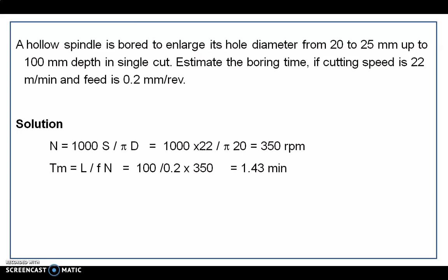The conventional formula for speed and machining time holds good for boring too. Here N equals 1000 multiplied by cutting speed divided by pi into d. The cutting speed is given as 22 meters per minute, whereas the initial diameter is 20 mm. Therefore, the rotational speed equals 350 RPM.